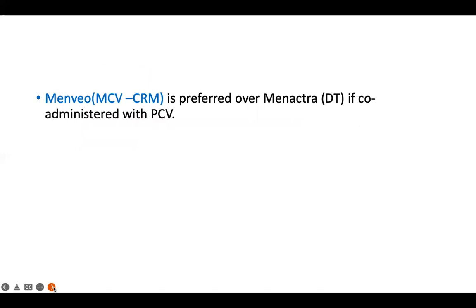An important point: pneumococcal conjugate vaccine and meningococcal conjugate vaccine conjugated to diphtheria toxoid should not be given on the same day, because many PCV serotypes are also conjugated to diphtheria toxoid, causing immune interference and reducing PCV immunogenicity. Currently two brands of meningococcal conjugate vaccine are available — one conjugated to CRM (Menveo) and one to diphtheria toxoid (Menactra). If Menveo is available, it can be given on day zero alongside PCV. If using Menactra, an interval of four weeks between PCV and Menactra is required.